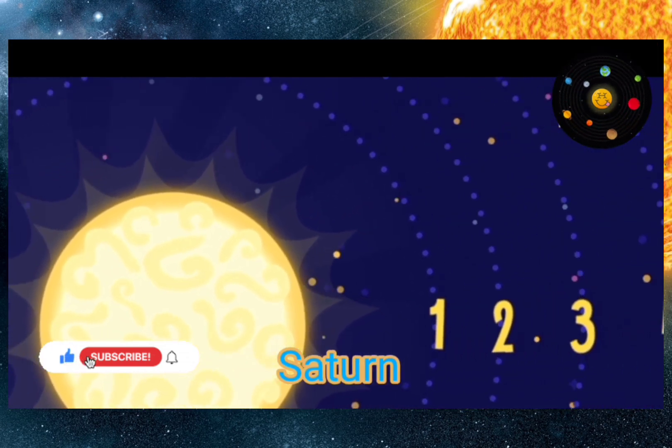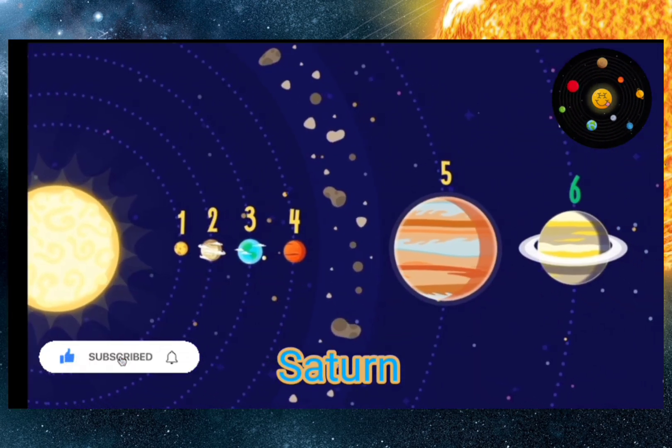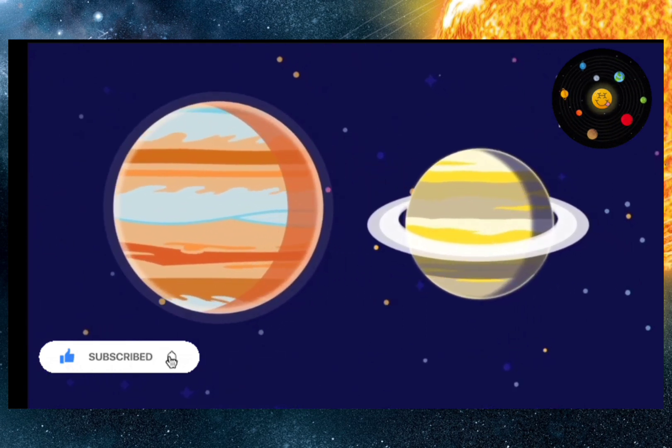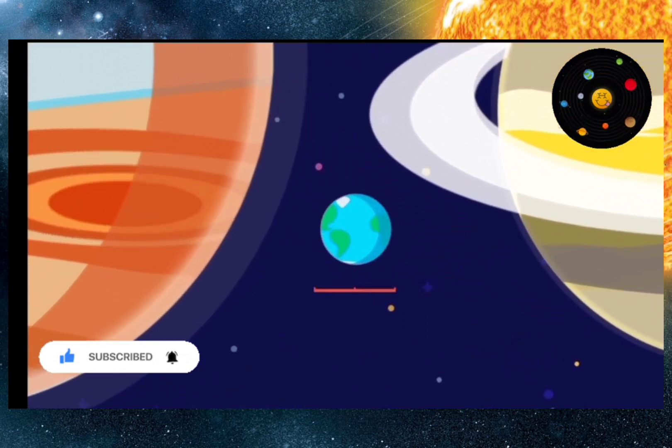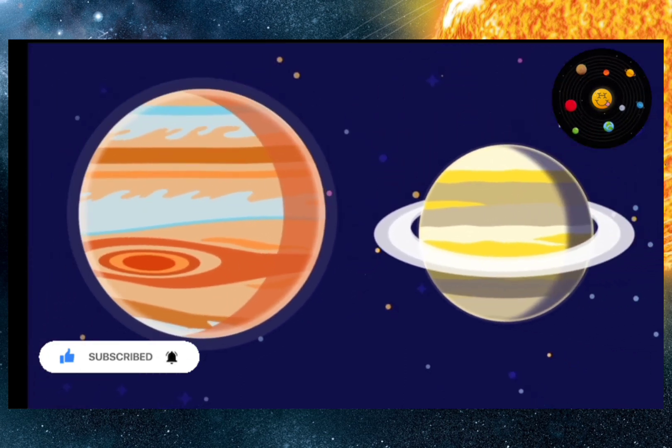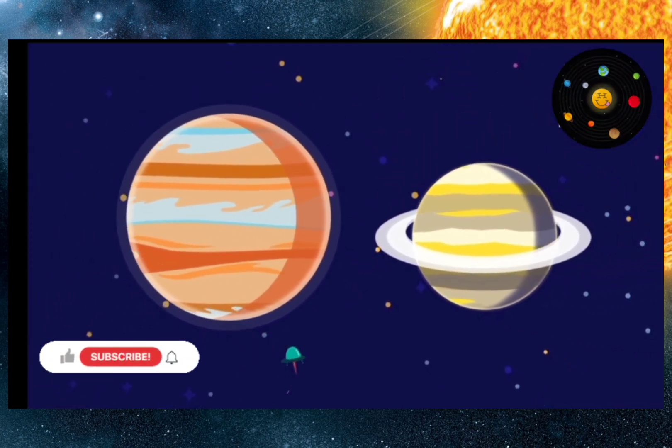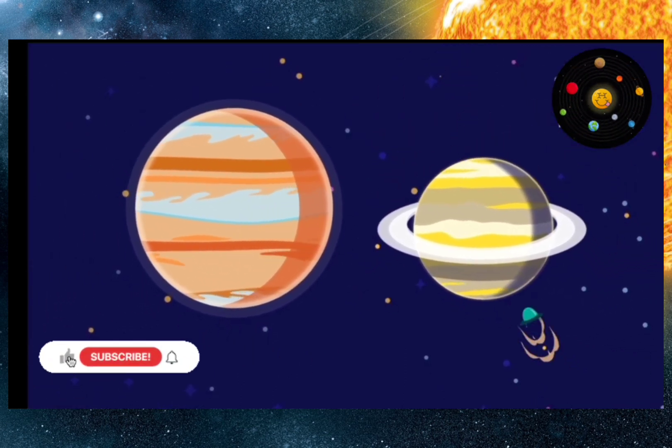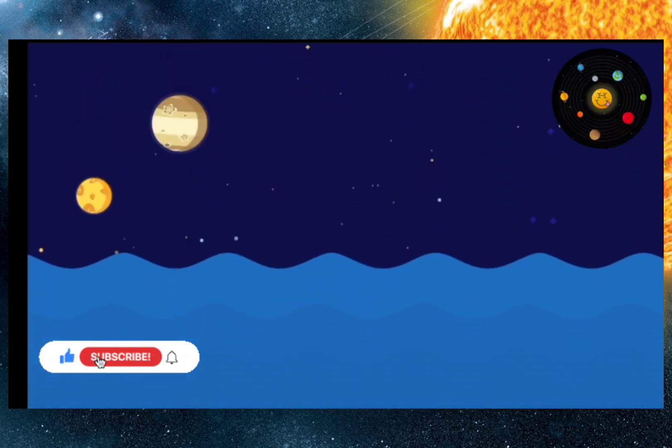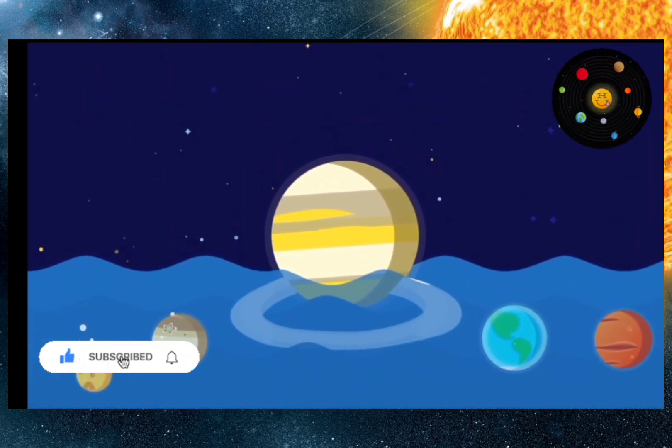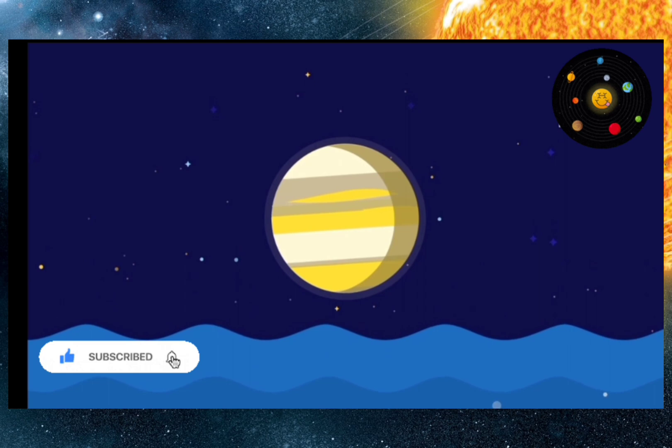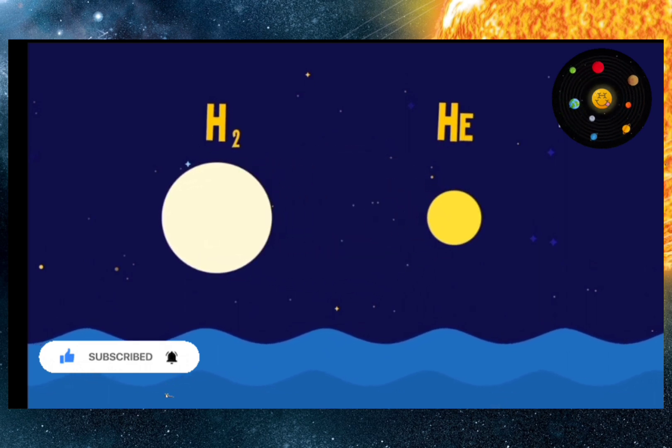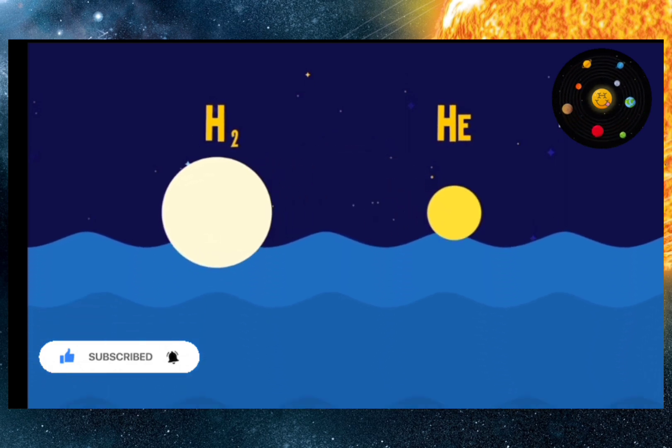Saturn is the sixth planet from the sun, and the second largest planet in the solar system. It belongs to the so-called gas giants, which consist mainly of various gases, and do not have a solid surface. If you could put Saturn into water, it would float to the surface, because hydrogen and helium, which make up a large part of the planet, are lighter than water.